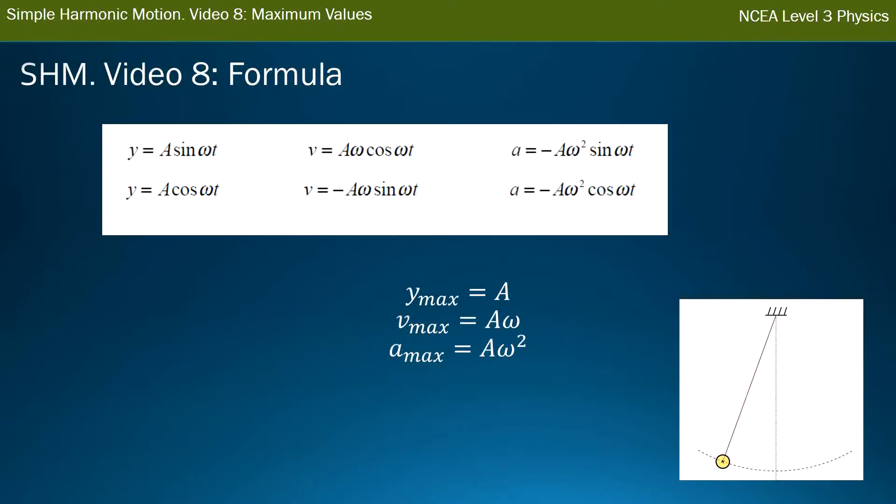And so that's it. These are the three largest values you can get. And the issue is you are never given those. You have to be able to look at the families of equations and realize the largest value you can get for sine or cos is 1. And so therefore the largest value for y, velocity or a, is these coefficients out the front of the cos or the sine.